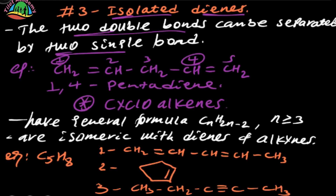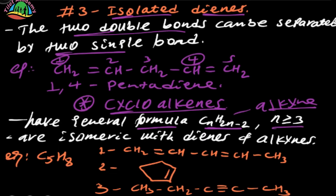The most important thing is the cycle of Alkene. Alkyne is the source of the carbon number, so the general formula is CnH2n-2, which is the same as the alkyne. The alkyne is isomeric with dynes and alkynes, and n is greater than or equal to 2.